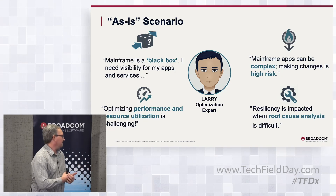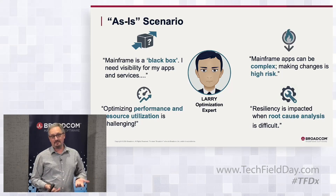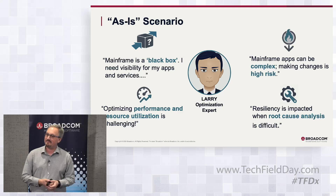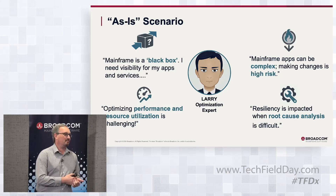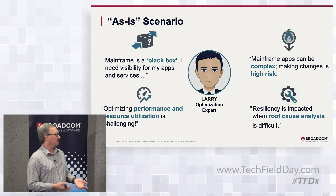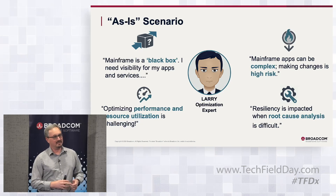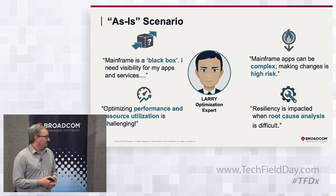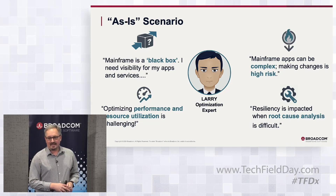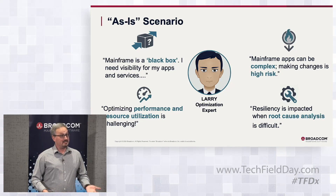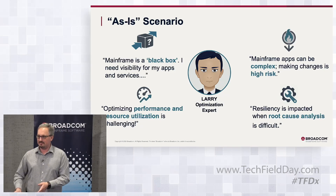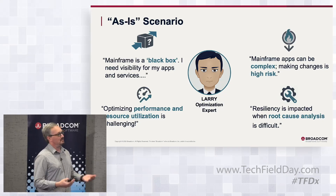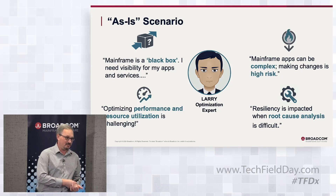That goes along with optimizing performance and resource utilization. As you change and configure your mainframe, things are going to affect the applications and how they're running, and you really need to have a good understanding of what's going on to get rid of the associated risk. The last piece is root cause analysis — when there is a problem, how do you track that back to an application, to a piece of code, to a module, and then have confidence that you're going to be able to change it?